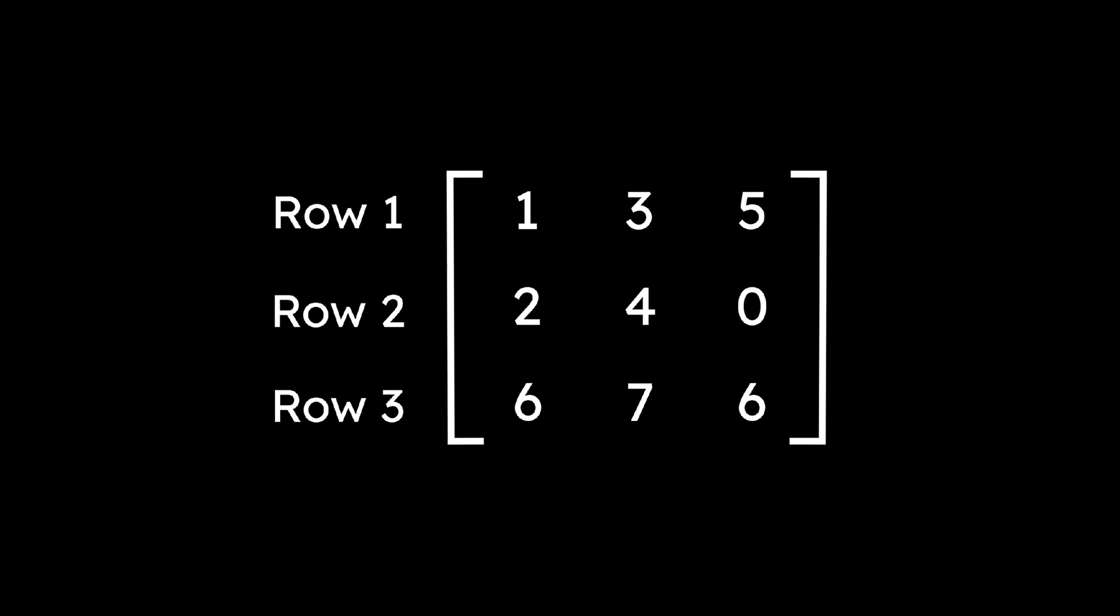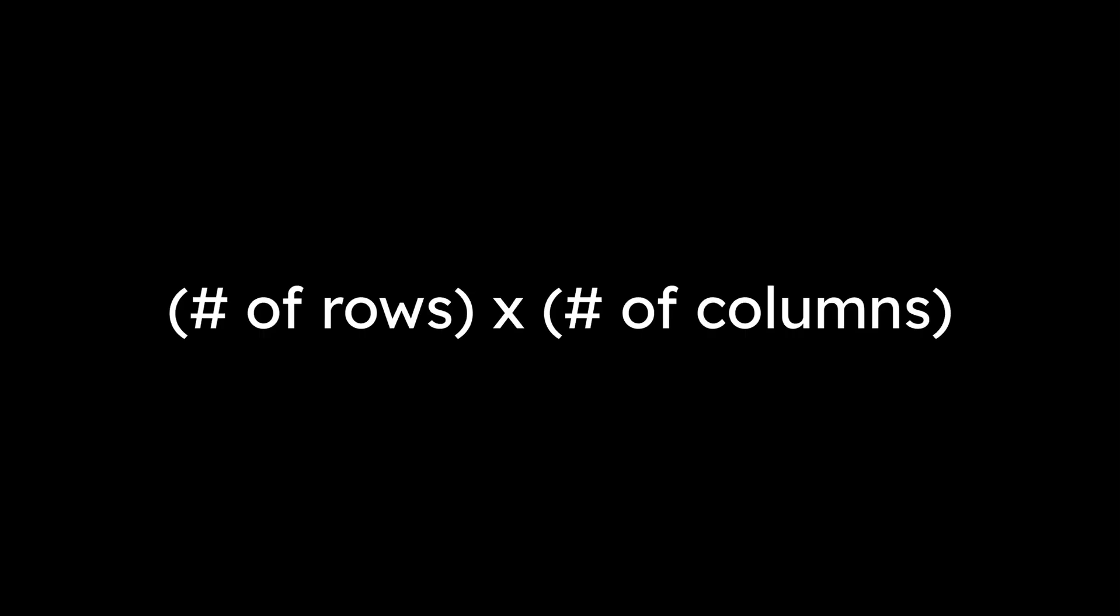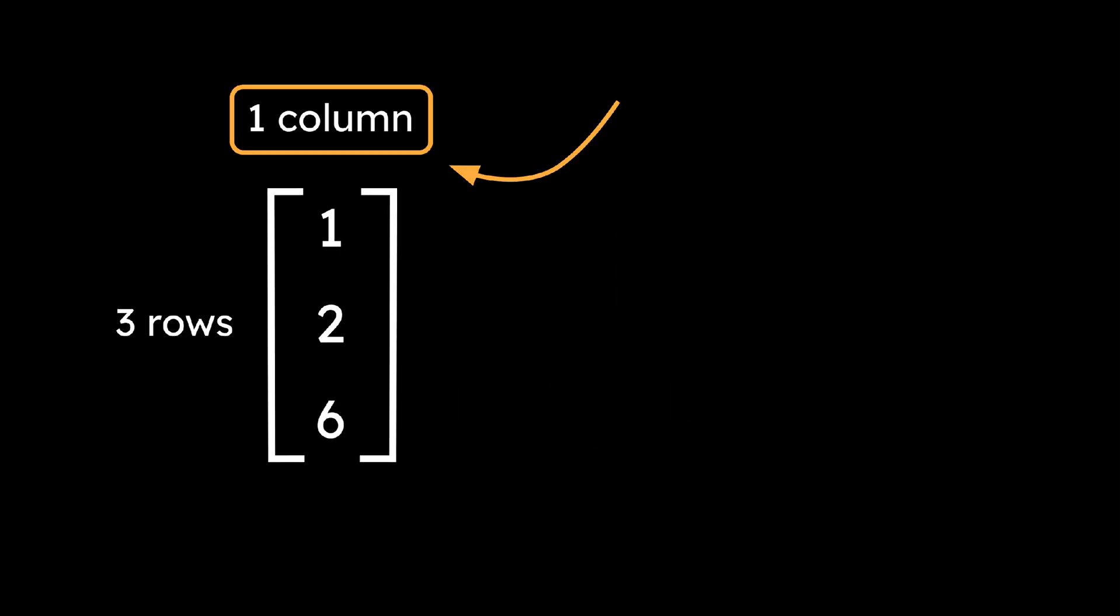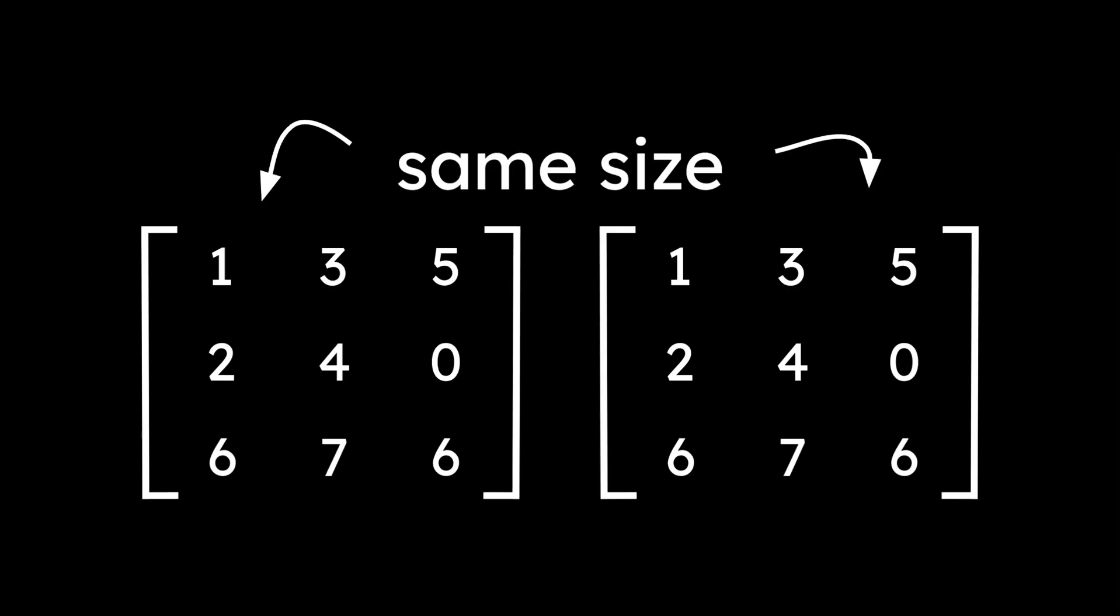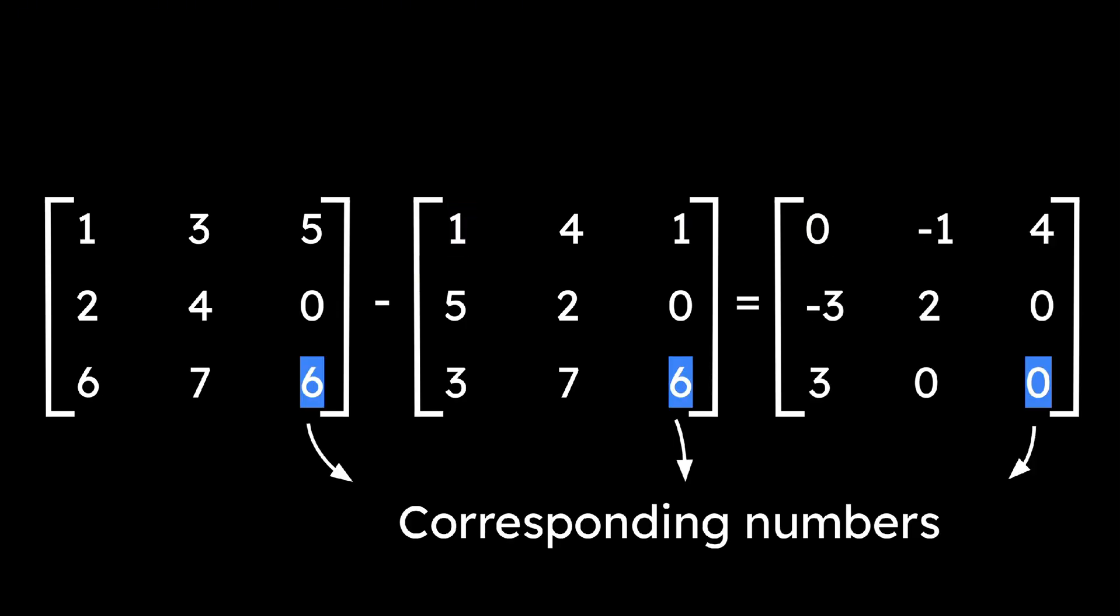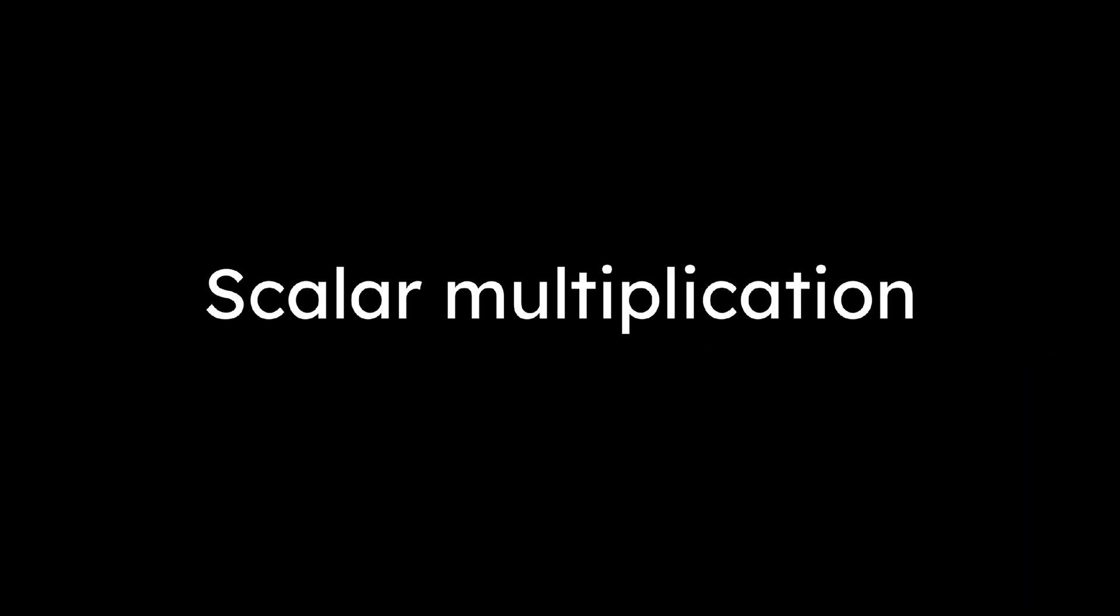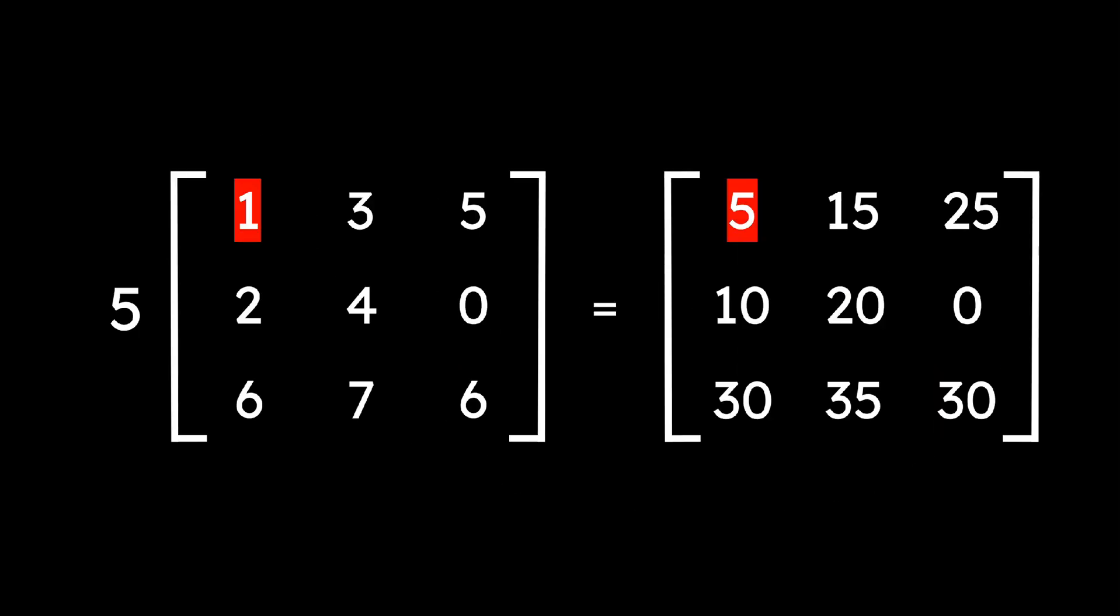A matrix is just a grid of numbers, arranged in rows and columns. The size of a matrix is always given as number of rows times number of columns. Notice that a vector is simply a matrix with a single column or single row. Adding and subtracting matrices is straightforward. They must have the same size, and you just add or subtract the corresponding numbers. Scalar multiplication is also pretty easy. It just means taking a single number and multiplying every entry in the matrix by that value.